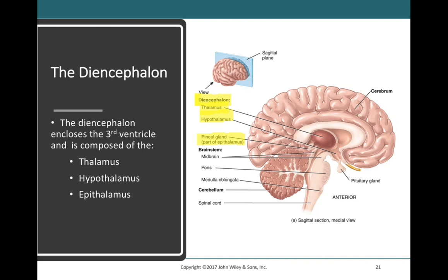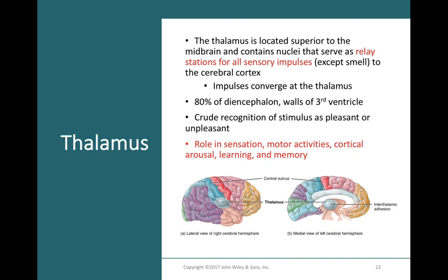The diencephalon is found in the center of the brain, just above the midbrain. It is composed of the thalamus, hypothalamus, and epithalamus. The thalamus sits in the middle of the brain. With the exception of olfactory information, all sensory information converges at the thalamus, which then sends integrated sensory data up to the cerebral cortex. The thalamus also plays a major role in learning and memory, since sensory information is directly tied to memories and why certain sensations are associated with different people and events.